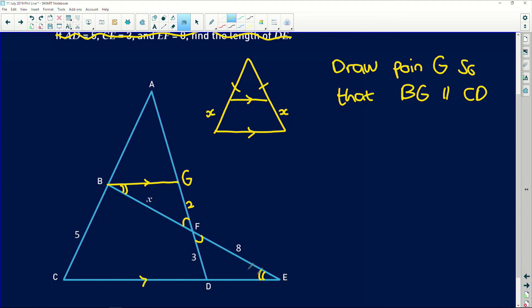These two lines are parallel to each other, and then obviously this angle will equal this one because of remaining angle. So you can say that triangle BGF is similar to triangle EDF.